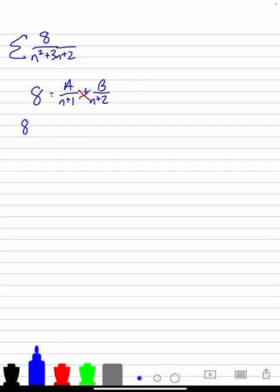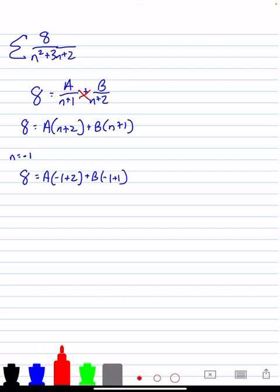We solved this by cross multiplication. So 8 would be A times n plus 2 plus B times n plus 1. So first, we would have to let n be equal to negative 1. Why? Because that would be a 0 here. So let's go through with that. 8 is equal to A times negative 1 plus 2 plus B times negative 1 plus 1. We could cancel out this side. The negative 1 plus 1's will cancel. So we have 8 is equal to 1A.